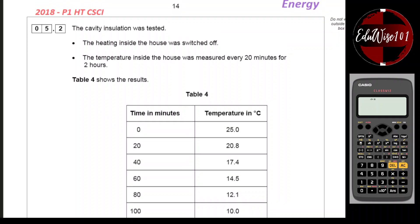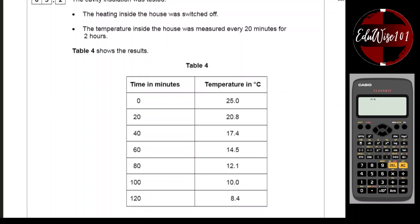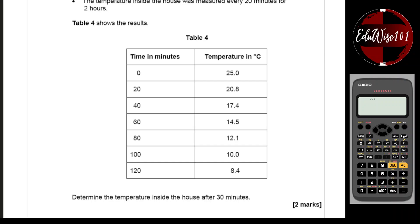Question 5.2. The cavity insulation was tested. The heating inside the house was switched off. The temperature inside the house was measured every 20 minutes for two hours. Table 4 shows the results. So you have the time in minutes from zero to 120, that's two hours. And the temperature seems to be going down steadily from 25 degrees to 8.4 degrees Celsius. What they're asking is, determine the temperature inside the house after 30 minutes.